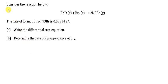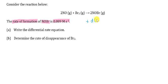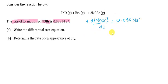Let's have a look at the first example. We have a reaction: 2 moles of NO reacted with 1 mole of bromine to produce 2 moles of NOBr. The rate of formation of NOBr is 0.089 molar per second. The rate of formation of NOBr is written as positive d[NOBr]/dt equals 0.089 molar per second. We are going to use this information in our calculation later.